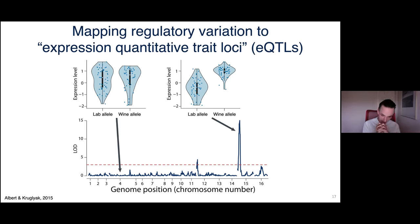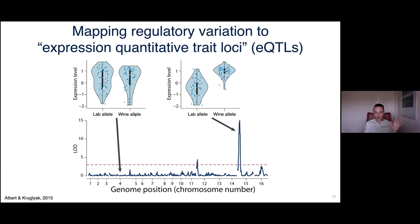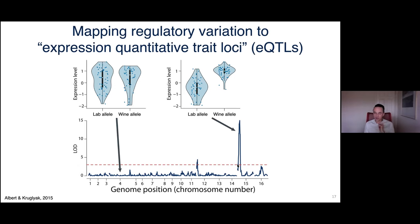We then performed expression quantitative trait locus mapping — eQTL mapping. We march across the genome and at every position group the segregants by whether they inherited the lab allele or the wine strain allele, then ask whether there's a difference in expression for a gene of interest. Where there is a difference, we plot that region as a statistically significant association — an eQTL. Importantly, eQTLs are regions, not yet individual mutations.